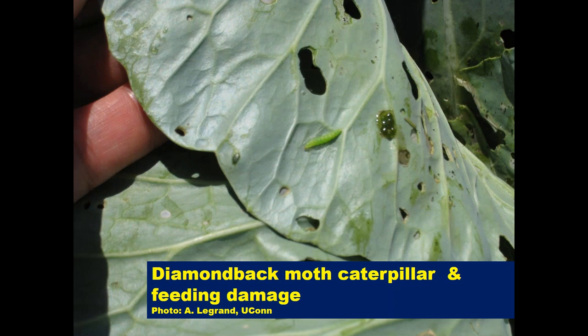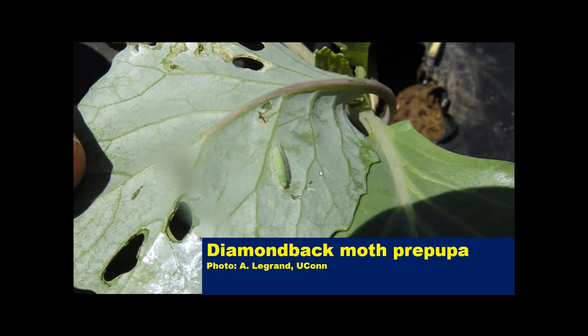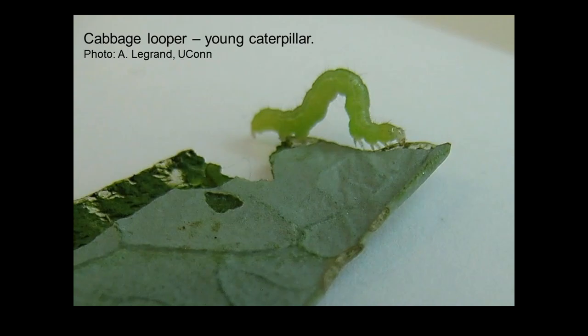To quickly review: the diamondback moth is a small green caterpillar that can cause very severe damage. We see its prepupa enclosed in a loosely webbed cocoon. The other caterpillar discussed last week was the cabbage looper, which moves in a very noticeable looping manner — a typical characteristic useful for identification. The one shown is a young caterpillar, but they can grow to a much larger size.